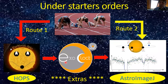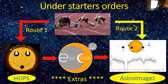The more experienced among you may wish to dive straight in to the potential pilot projects — Route 2— which I'll show some examples of on the following slides. Hopps software is that used to generate light curves for input to Exoclock, and AstroImageJ can also be used to analyse images, as demonstrated by Richard Lee.